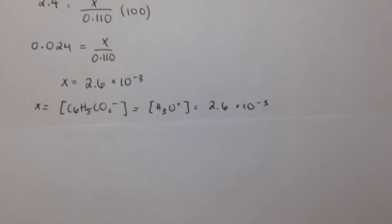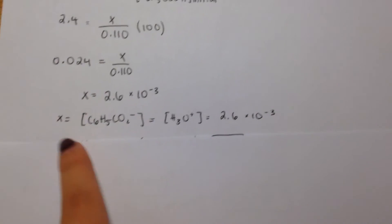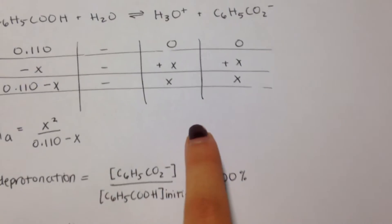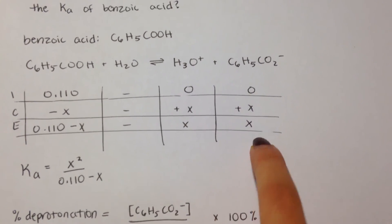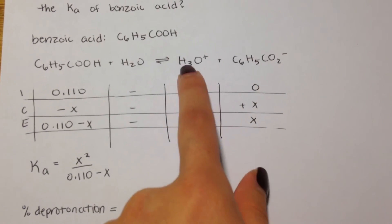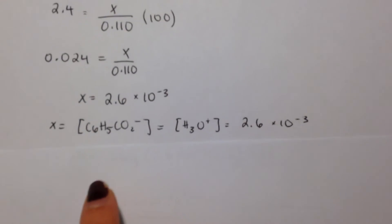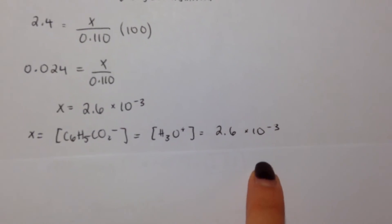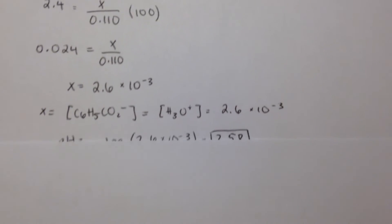And then that is x, so x from the ice table is the concentration of both the conjugate base and the hydronium ion. So it's equal to each other, and it's also 2.6 times 10 to the negative third.